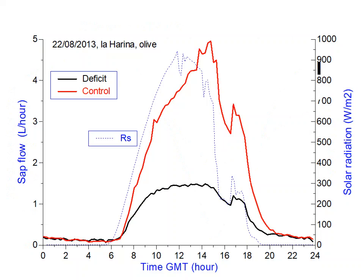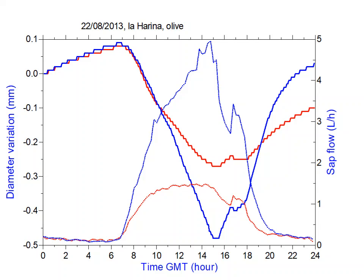If we superimpose the diameter variation and the sap flow, we see that the two curves are interrelated. When we have more transpiration we have more contraction of the stem, and when we have less transpiration — for example during cloudy periods — we reduce the contraction of the stem.